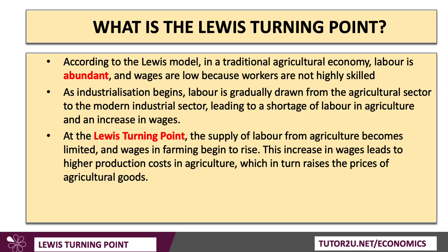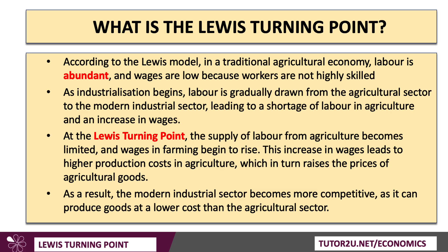At the Lewis turning point, the supply of labour from farming becomes limited — inelastic, if you like — and it becomes more inelastic and is shifted to the left. Therefore, average wages in farming start to go up. That then leads to higher production costs, which in turn raises the price of farm output. Whereas the modern industrial sector is now able to take advantage of the influx — the increasing supply of people who've left the farm sector and moved, often internally, towards urban manufacturing centres. As the modern industrial sector scales up production, allied to low labour costs, it can now produce goods at a lower cost than the farm sector.